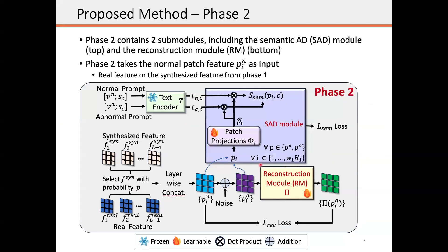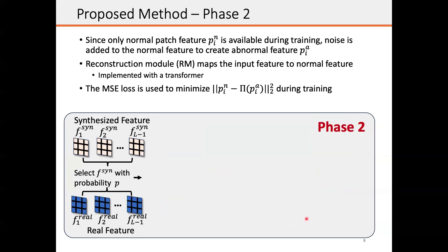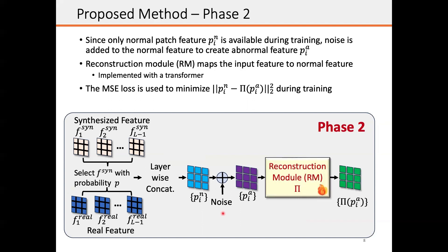After phase one is trained, we then train phase two, which contains two modules, including the semantic AD module on the top and also the reconstruction module, or RN module, on the bottom. The input of phase two is a normal patch PIN, which can be the real feature or the synthesized feature from phase one. Since only normal patch features PIN are available during training, noise is then added to the normal feature to create the abnormal feature PIA. We then train the reconstruction module to map the input feature to the normal feature. The reconstruction module is implemented with a transformer, and then we can use the MSE loss to minimize the difference between the reconstruction and the input during training.